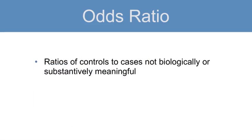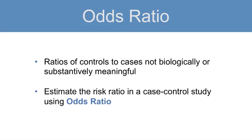So let's review. We can't estimate a risk or rate directly from a case control study because we or the researchers decide on the number of diseased people, the cases, and the non-diseased people, or controls, when we design our study. So the ratio of controls to cases is not biologically or substantively meaningful. Instead, we estimate the risk ratio or the rate ratio in a case control study using the odds ratio.